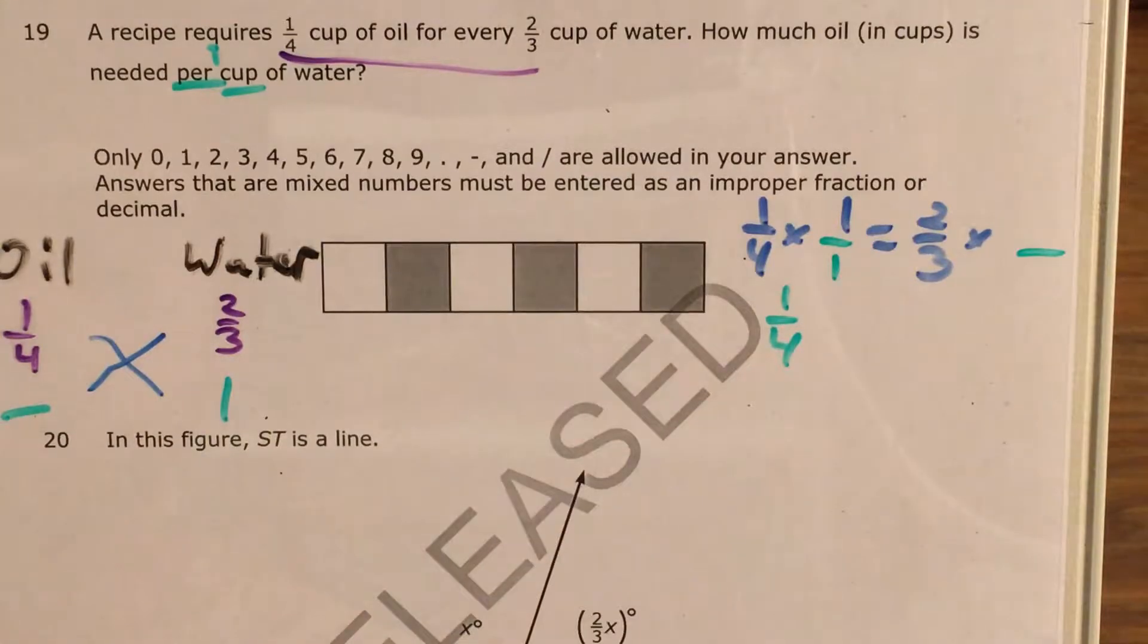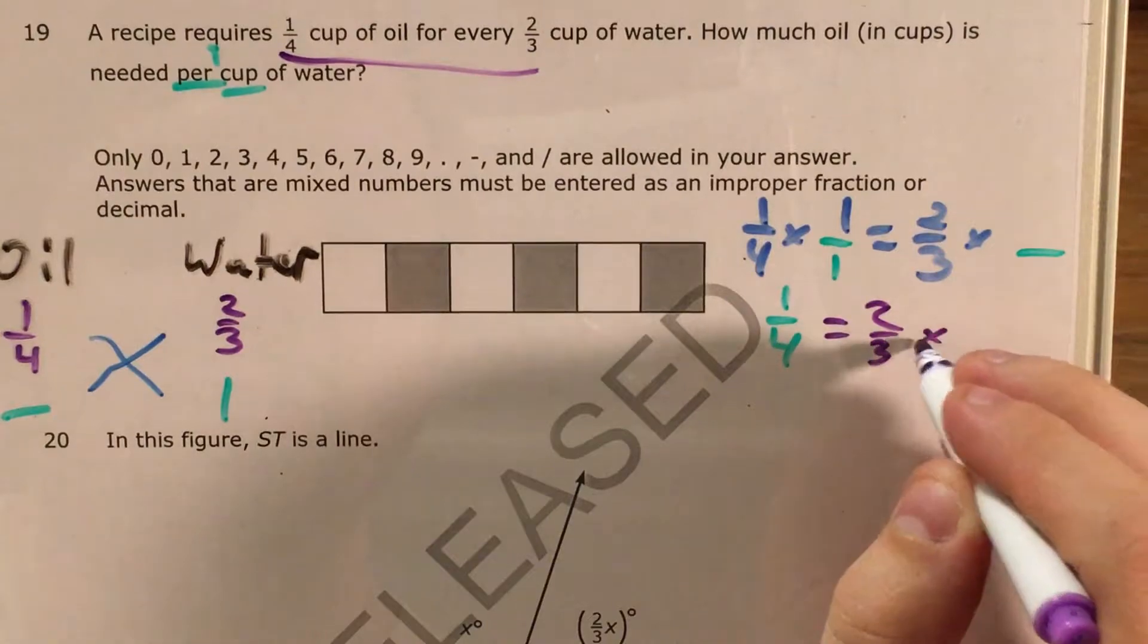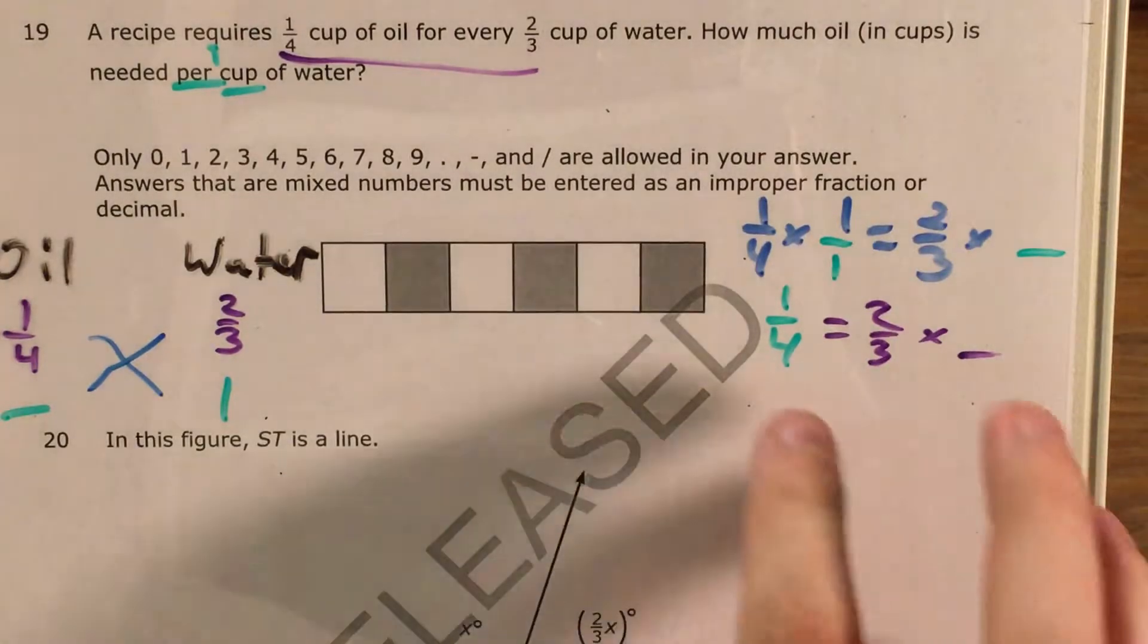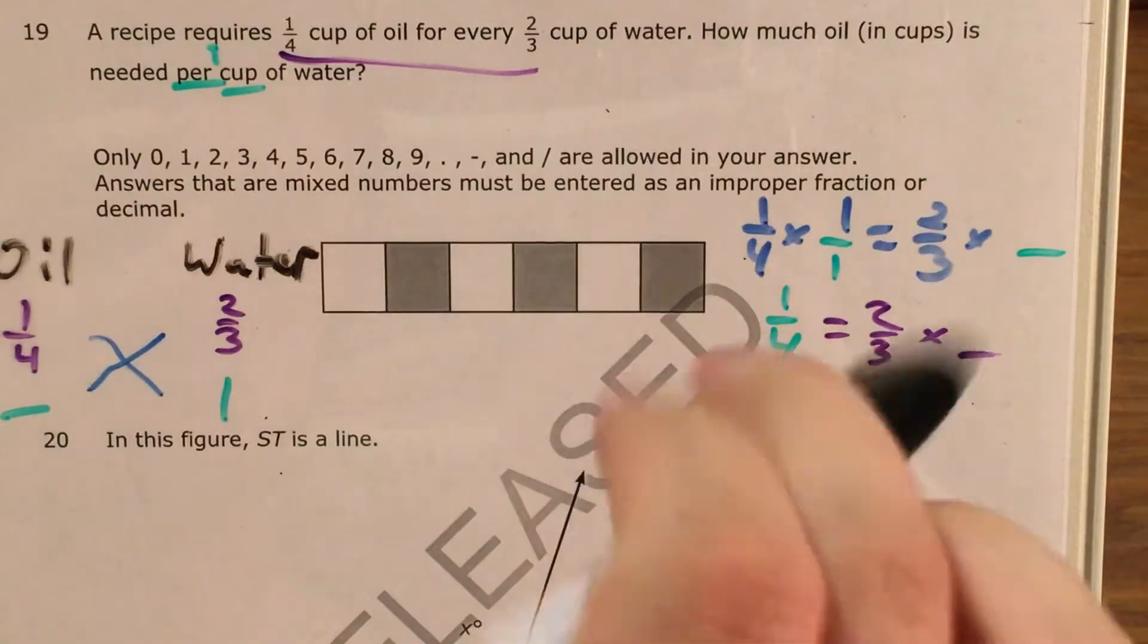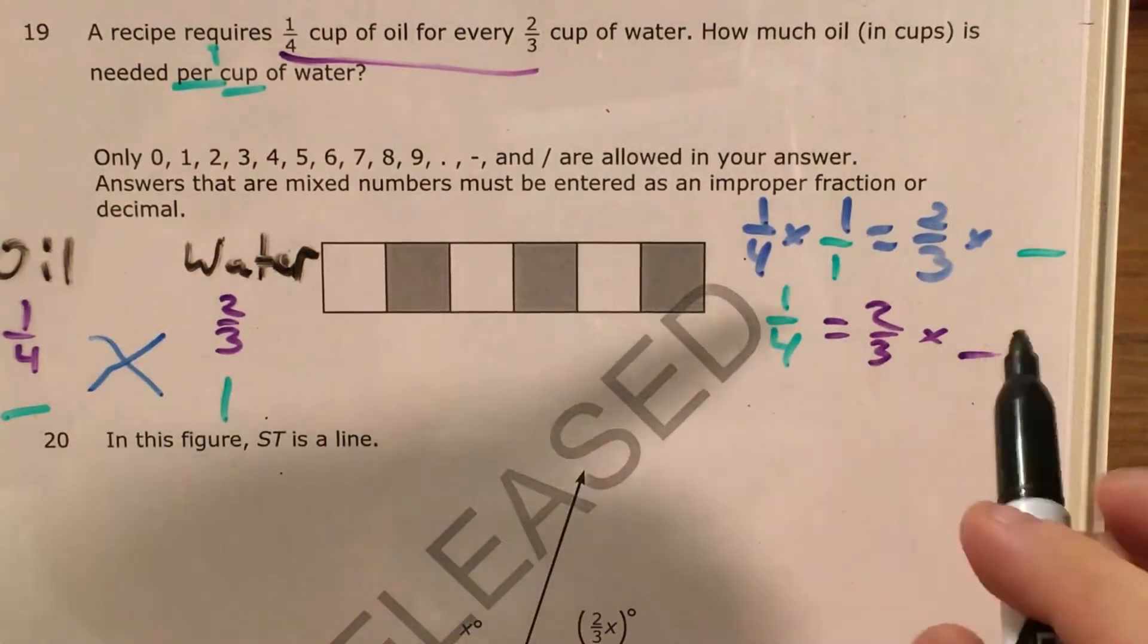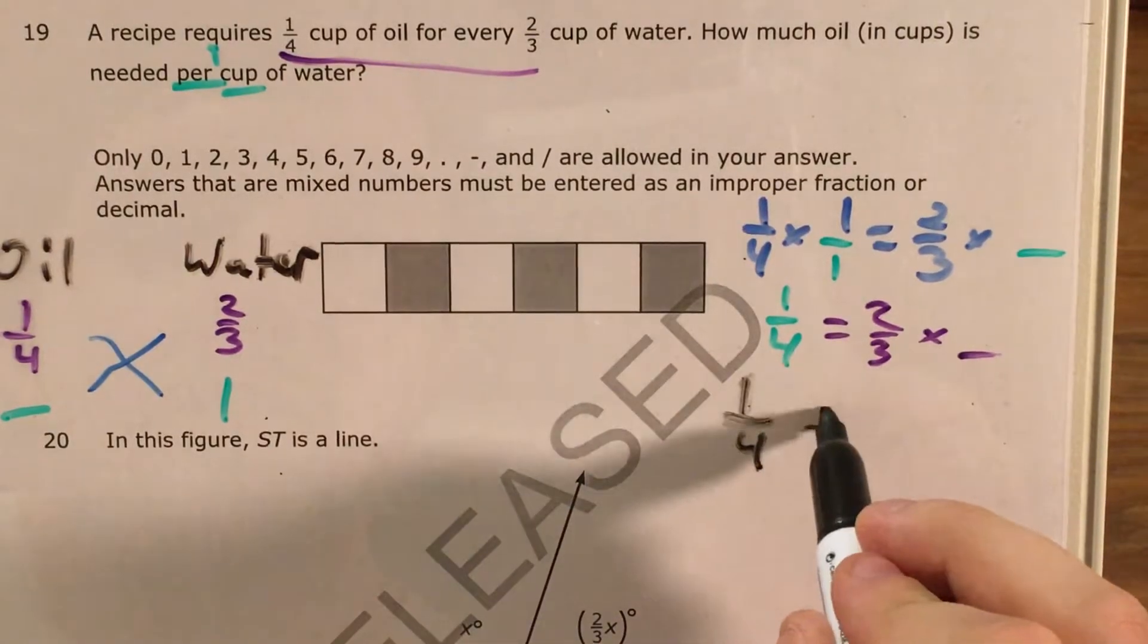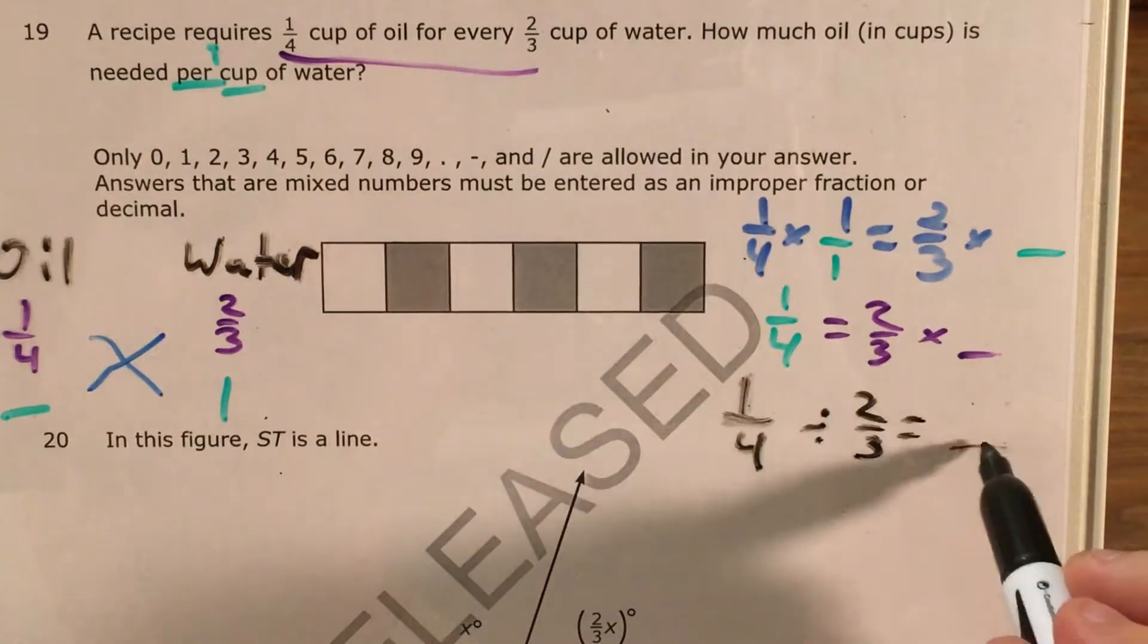So now I know that one-fourth equals two-thirds times something. And it's at this point that I prefer, given the choice in a problem like this between equation ideas and fact families, I actually prefer fact families. Because if I know that one-fourth equals two-thirds times something, then I also know that one-fourth divided by two-thirds equals that same thing.